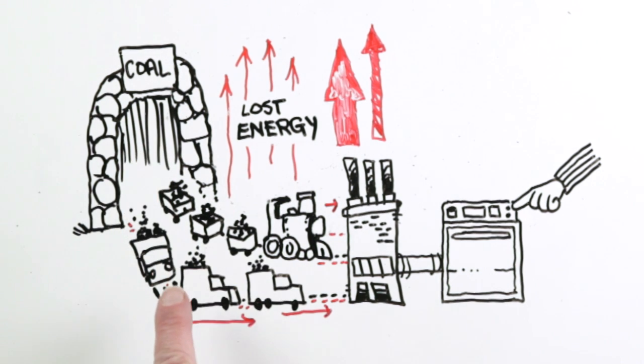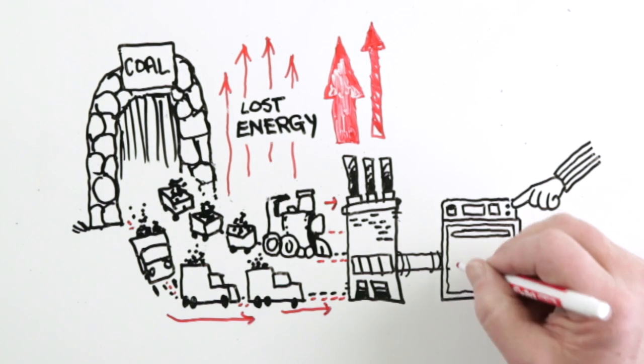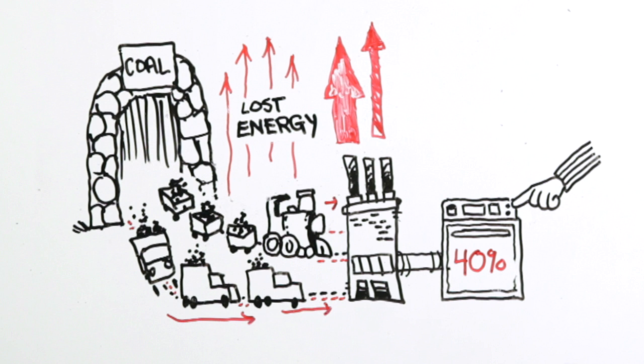That's where this idea of energy efficiency comes in. The more steps there are in the journey energy takes to get to your home, the less energy efficient its full fuel cycle is. The fact is, due to there being too many of these steps along the journey, the electricity that arrives in most of the homes in the United States is only about 40% efficient. So,